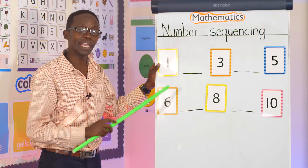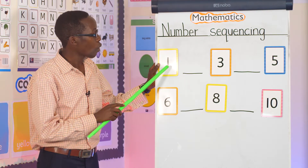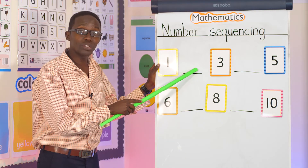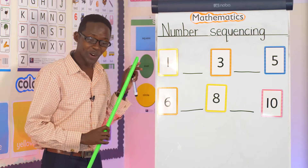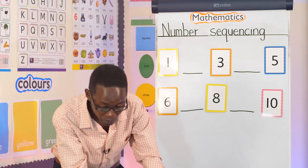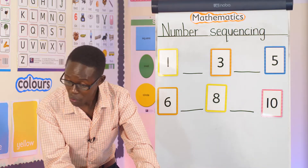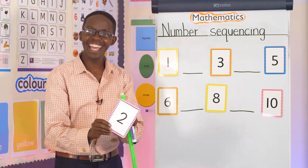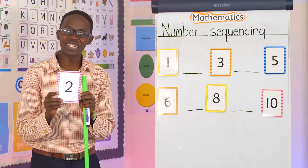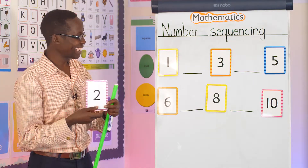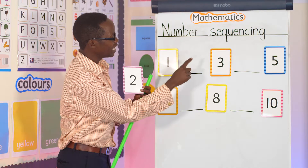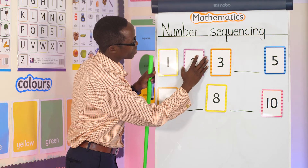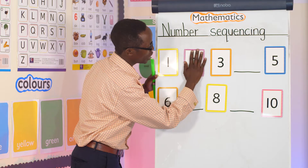Let's start. One, two. Do we have number two here? No. So we look for number two. Where is number two? I have number two here. So I say one, two, and I come here and fix my number two. It was missing.